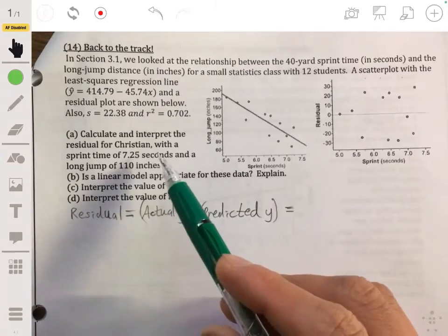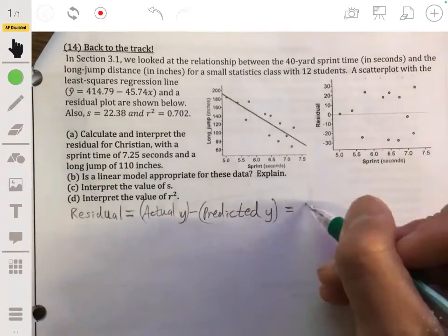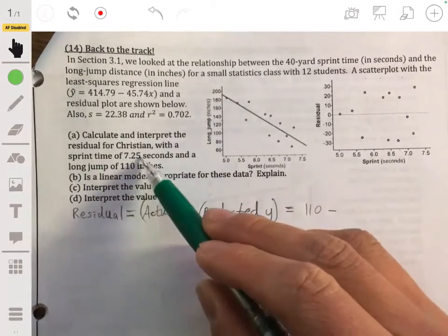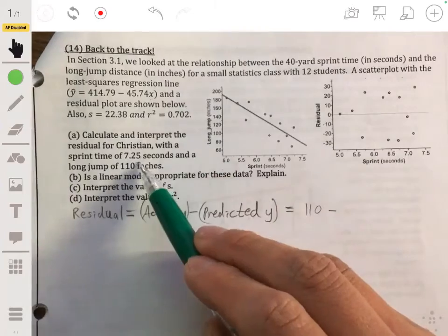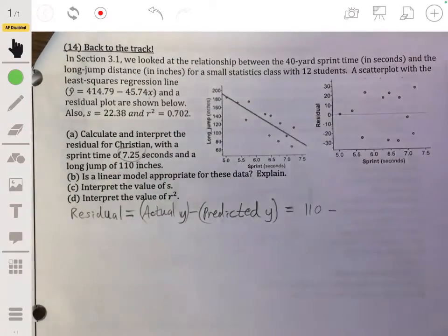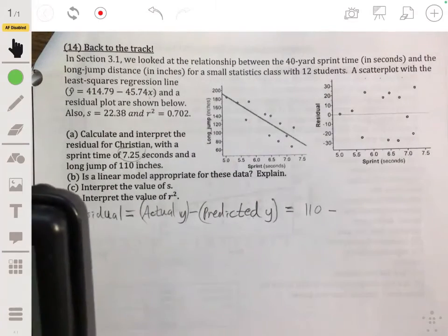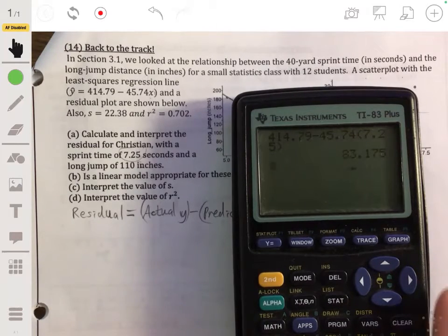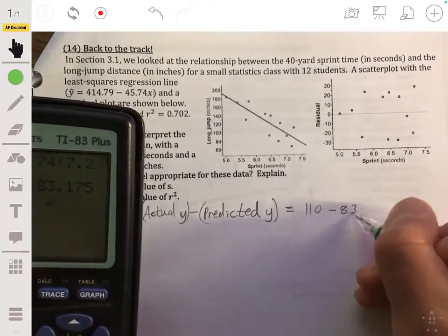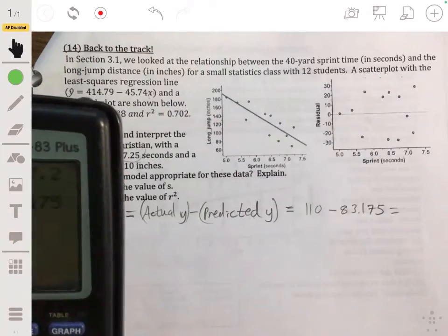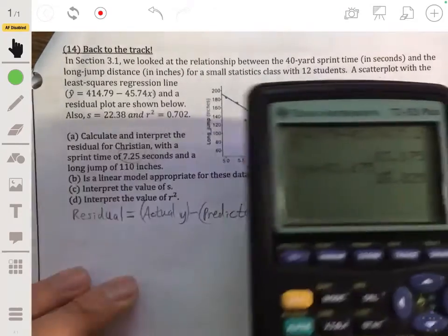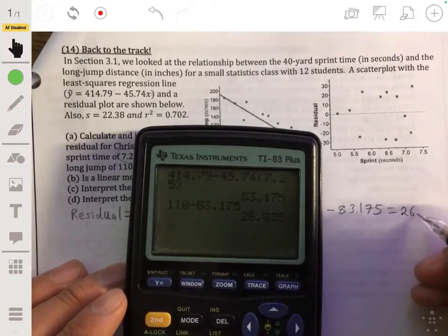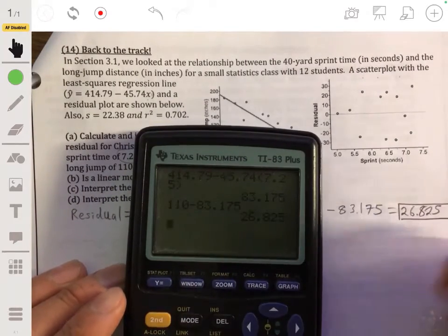So his actual y value, his actual long jump because those are the y values, was 110. His predicted y value would be the y value you would predict him to get based on this equation, which means that we need to plug in 7.25 into that to get what we would have for y-hat. So 414.79 minus 45.04 times 7.25, and we get 83.175. That taken away from 110 will give us 26.825. So this is our residual.